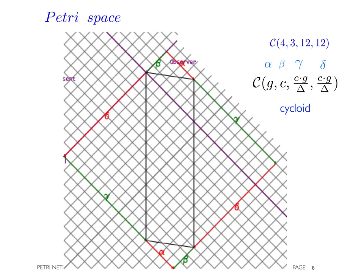The equivalent cycloid is represented here by its fundamental parallelogram within the Petri-space. It has the parameters alpha, beta, gamma, and delta equal to 4, 3, 12, and 12.